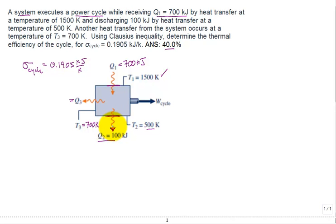If we're looking to calculate the thermal efficiency, it's our work out of the cycle, W_cycle, divided by what comes in in the form of heat transfer to drive this heat engine operating at steady state. The only heat in is Q1, which is 700 kilojoules. So what we want to do is get the work of the cycle.